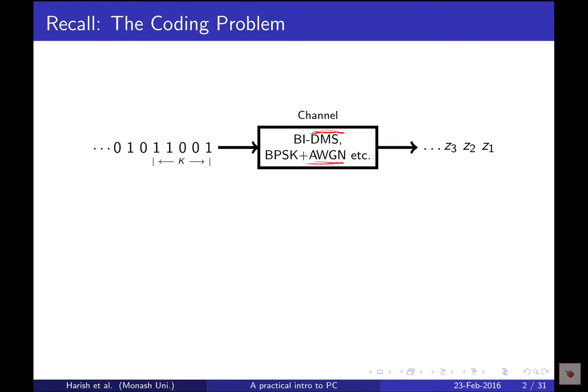All we want to do is recover the originally transmitted information bits from the noisy versions received. This seems straightforward — it can be posed as a traditional detection problem and there are optimal detectors available — but there is a small detail worth explaining: what coding actually is.